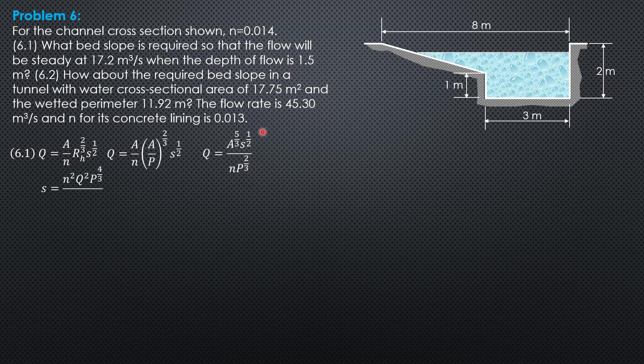N square by squaring everything. Q square perimeter to the 4 thirds over area to the 10 thirds. So we'll use this formula in this problem.